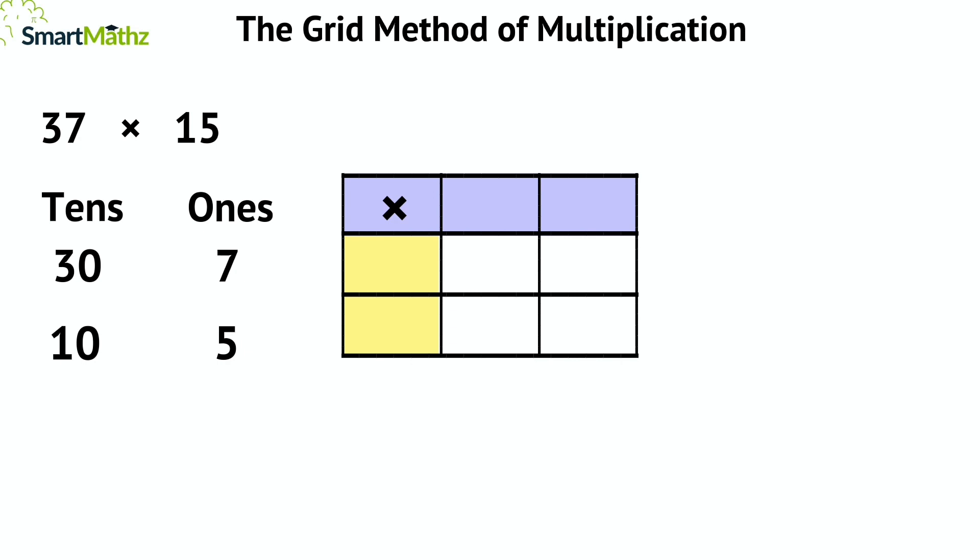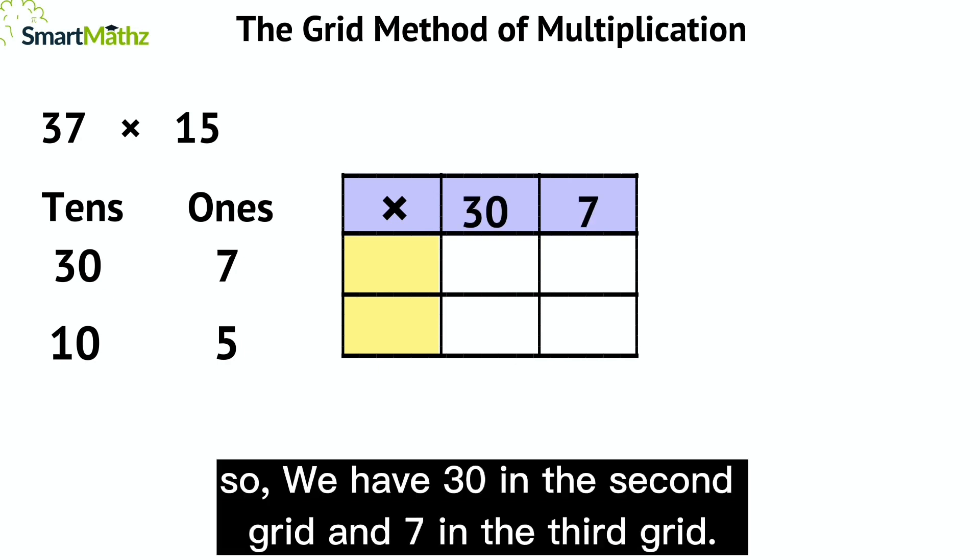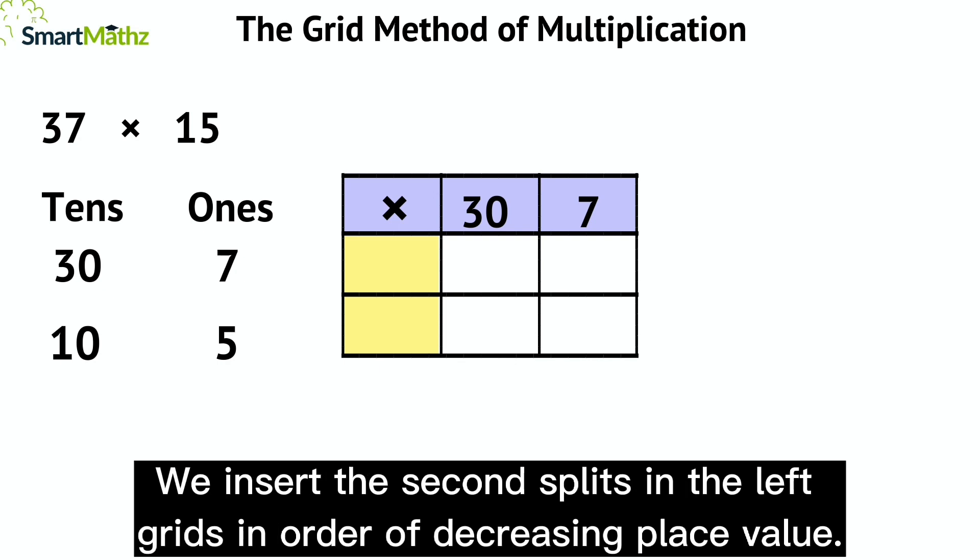The greater number preferably in the top grids, so we have 30 in the second grid and 7 in the third grid. We insert the second splits in the left grids in order of decreasing place value—that means we have 10 first and then 5 in the row below.